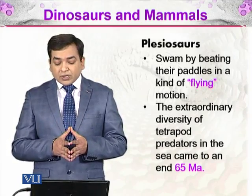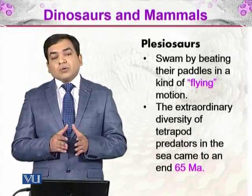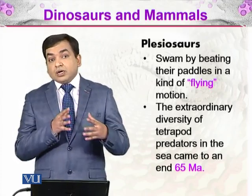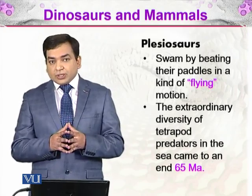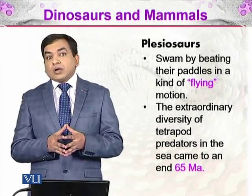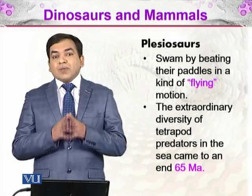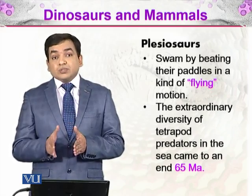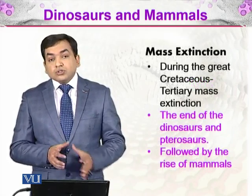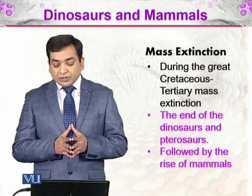The extraordinary diversity of tetrapod predators in the sea came to an end 65 million years ago. We know what happened — there was a major extinction event due to a meteor strike at Chicxulub, Mexico, which led to mass extinction. During that extinction, these plesiosaurs were not able to survive. This was the great Cretaceous–Tertiary mass extinction event.